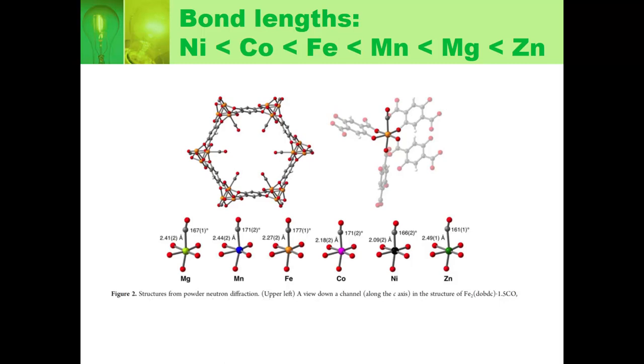Because they were building these metal-organic frameworks, they were able to put in whatever metal they wanted. They were able to test exactly, if I just change the metal, how does that change binding? This is the metal-organic framework they have right here. What we're really interested in is just the metal. You see how it's highlighted on the right there.